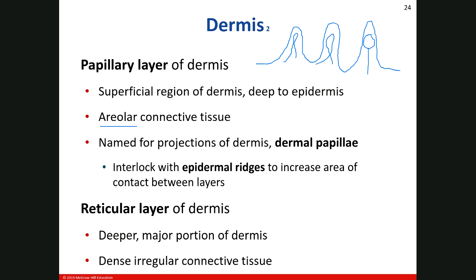What happens is they interlock with these structures here — the epidermal ridges. The epidermis filling in is epithelial tissue. This interlocking configuration creates those friction ridges we've discussed — your fingerprints. Aside from being a great way to identify people, those friction ridges actually make it a little bit easier for us to grasp things.